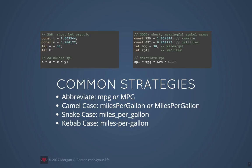Here are two code snippets giving examples of bad and good naming. Starting with the bad: both snippets do the same thing — convert kilometers per liter to miles per gallon. On the left we've got short variable names but who knows what they mean — they're cryptic. x, y, a, b — unless you know what kpl is, 'b equals a times x times y' doesn't tell you anything about what the program does.